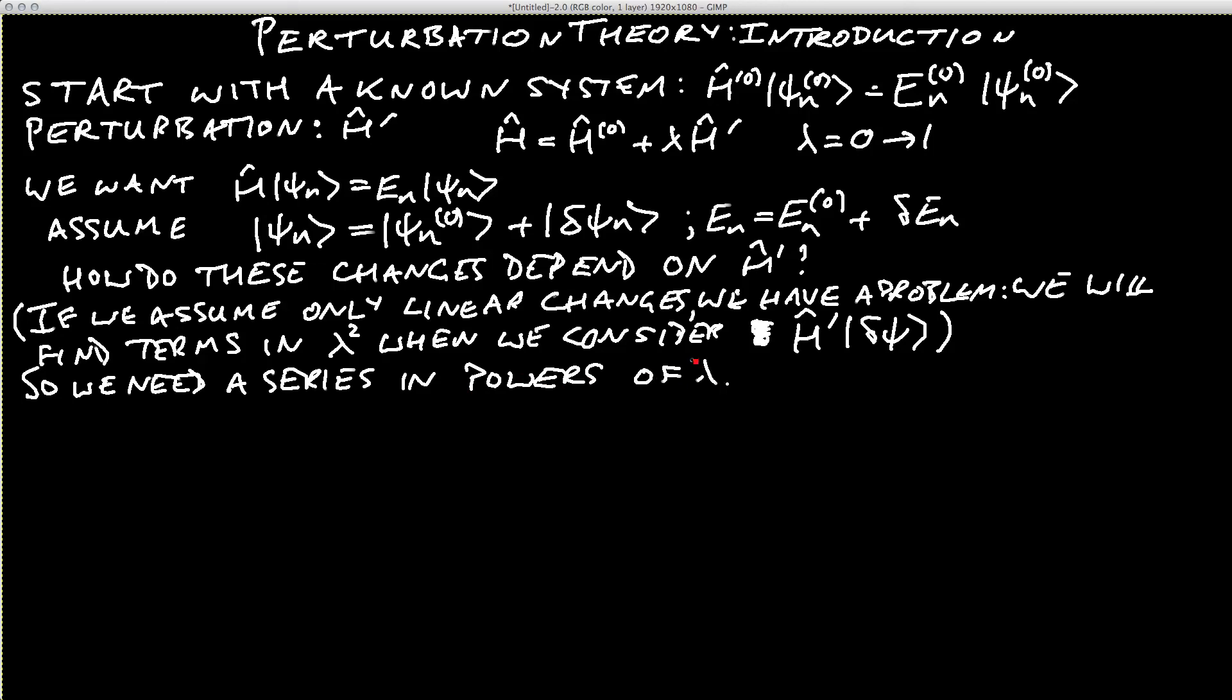Now let's look back at the form of this. We've written ψₙ, the wave function for the new Hamiltonian, equal to ψₙ⁽⁰⁾, the eigenstate for the old Hamiltonian, plus a small change Δψₙ.